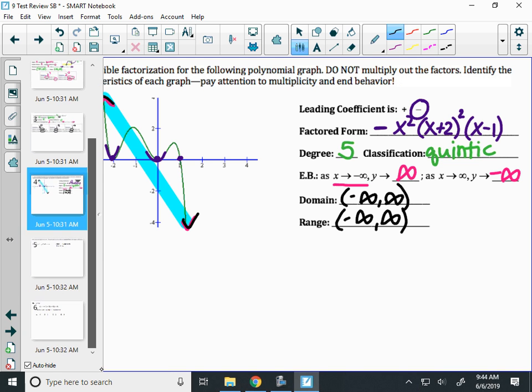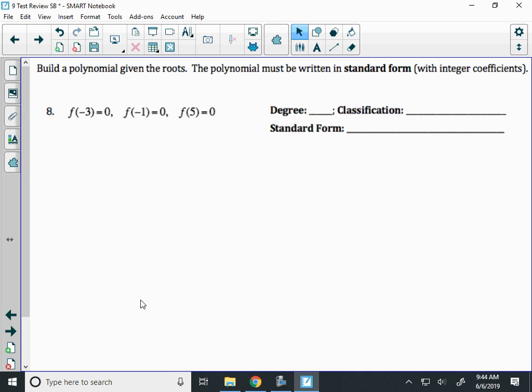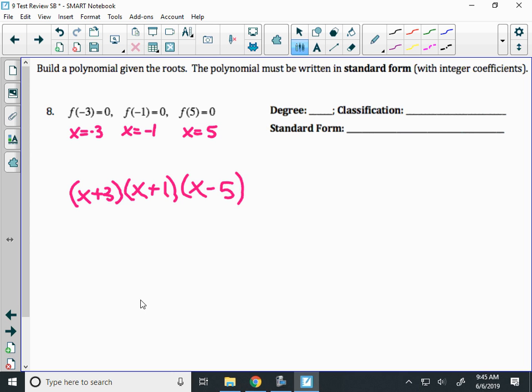All right, a couple more here. We're going to do two more. So let's build a polynomial. You need to write factored form first in order to get to standard form, and then multiply to get to standard form. So when I give you the function notation, then it tells you that I have a root at negative 3, negative 1, and 5. Now when you write your factors, you get the opposite signs of those roots. That's called factored form.